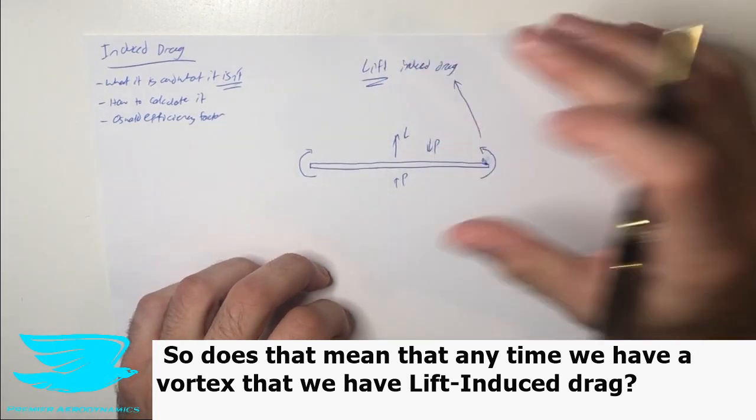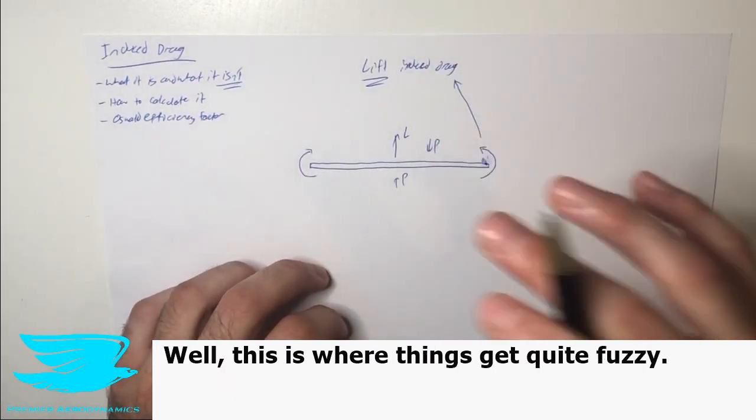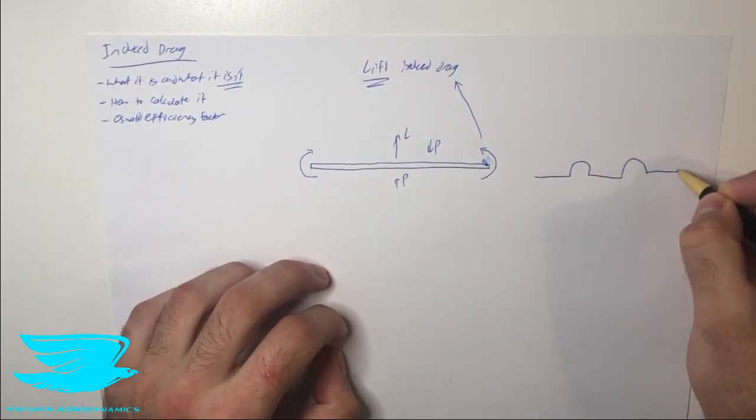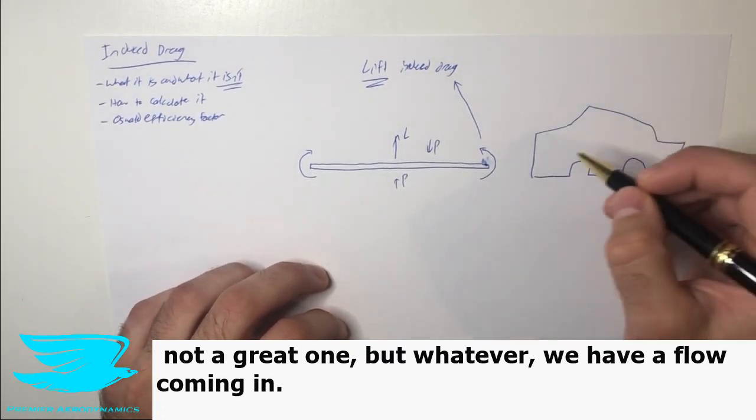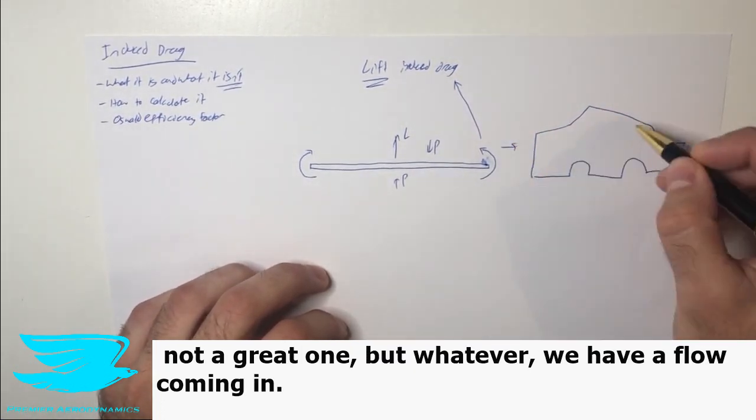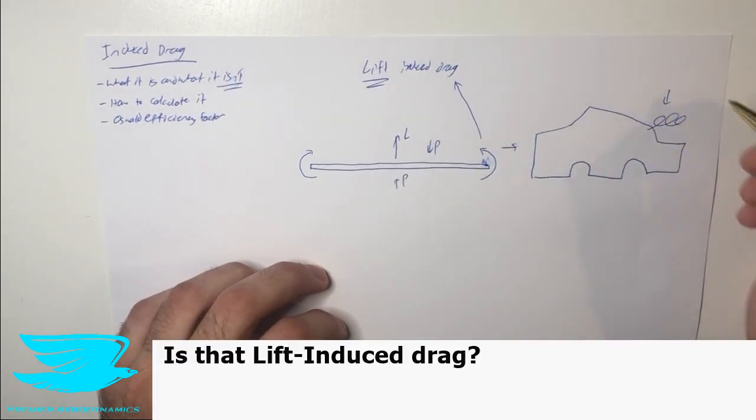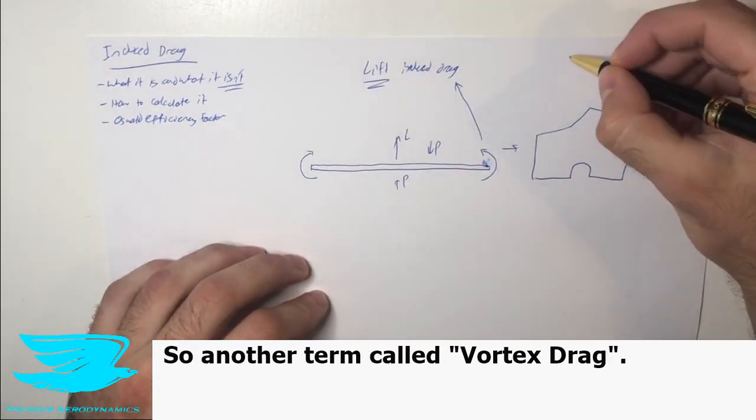So does that mean that anytime we have a vortex, that we have lift induced drag? Well, this is where things get quite fuzzy. So for example, in the automotive industry, where we have a car, just a simple drawing of a car, not a great one, but whatever. We have the flow coming in, and we might get a vortex being formed here. Is that lift induced drag? Or is it just regular vortex drag?